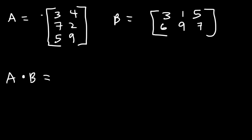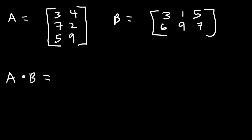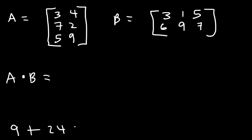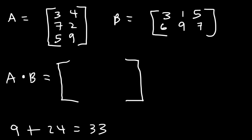We're going to multiply the first row by the first column. So we have 3 times 3 which is 9, and then 4 times 6 which is 24. So 9 plus 24 adds up to 33. This result is going to be in the first row, first column.